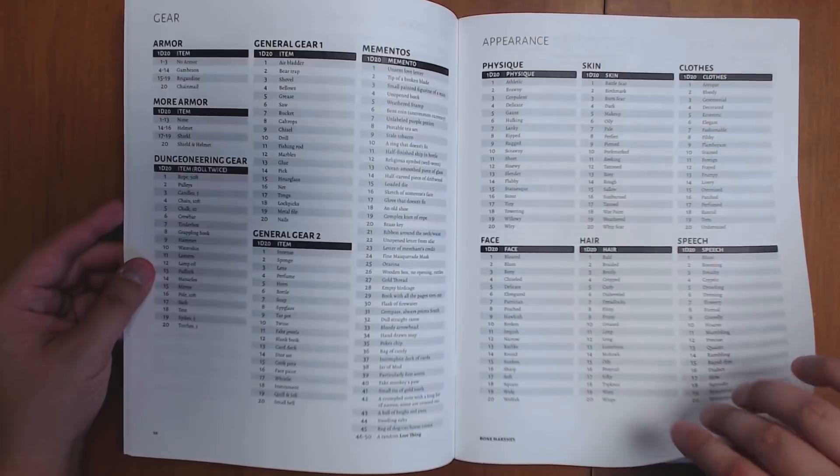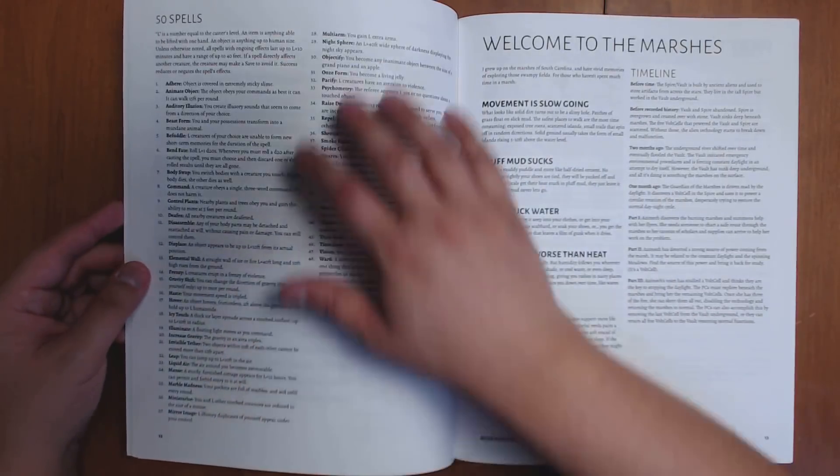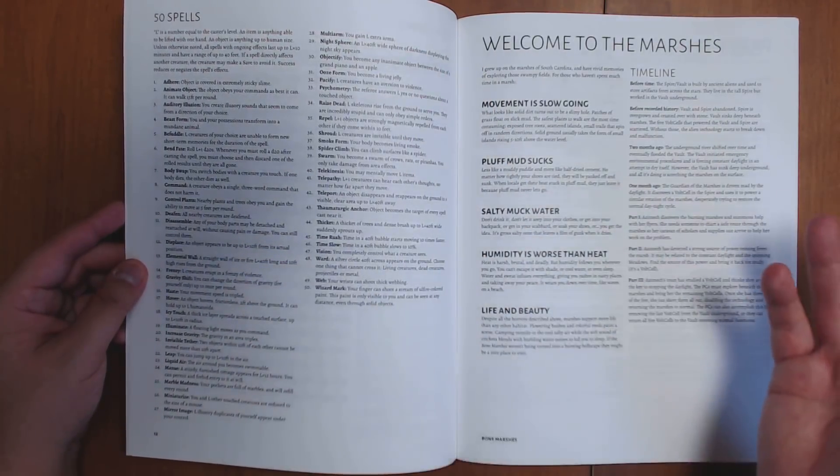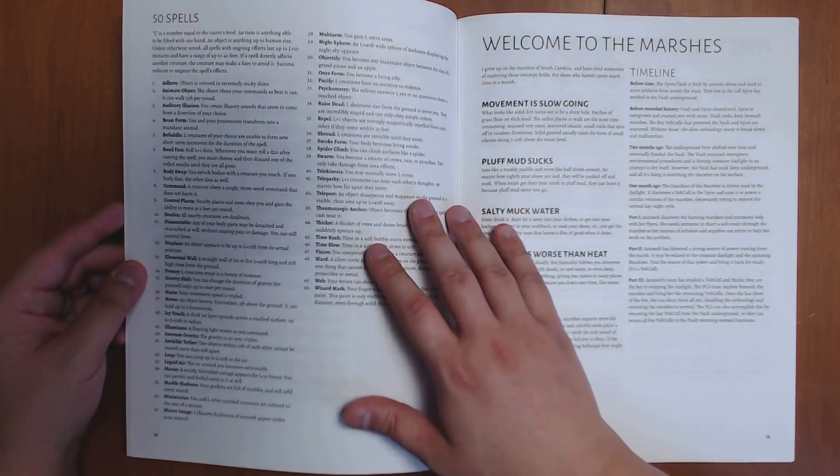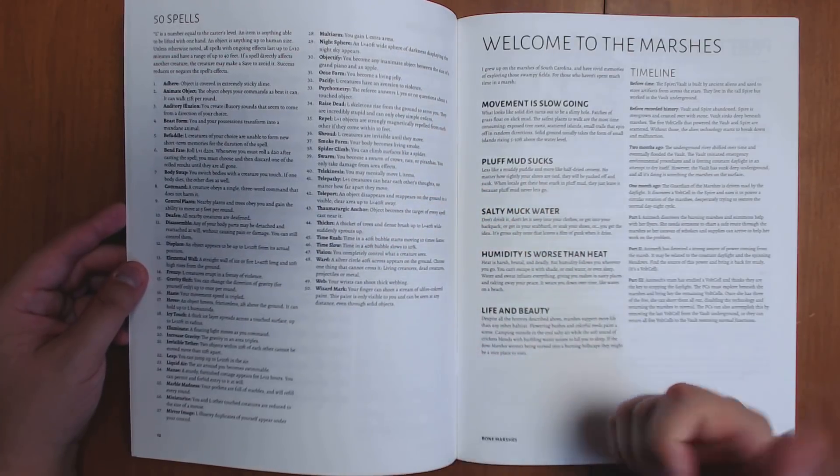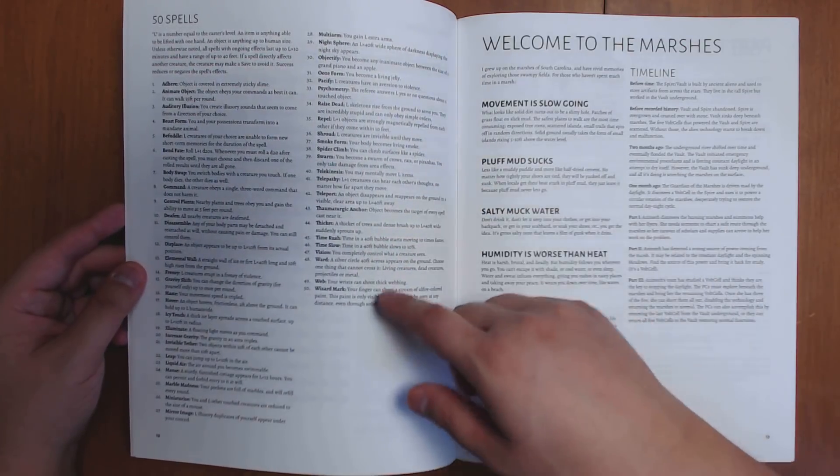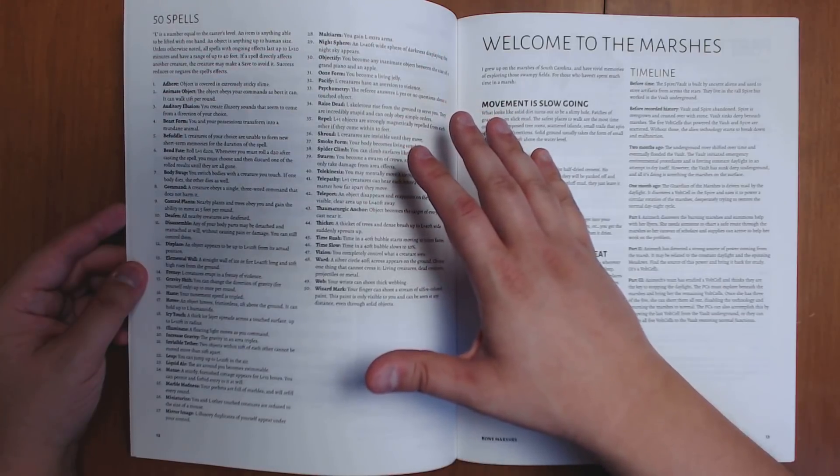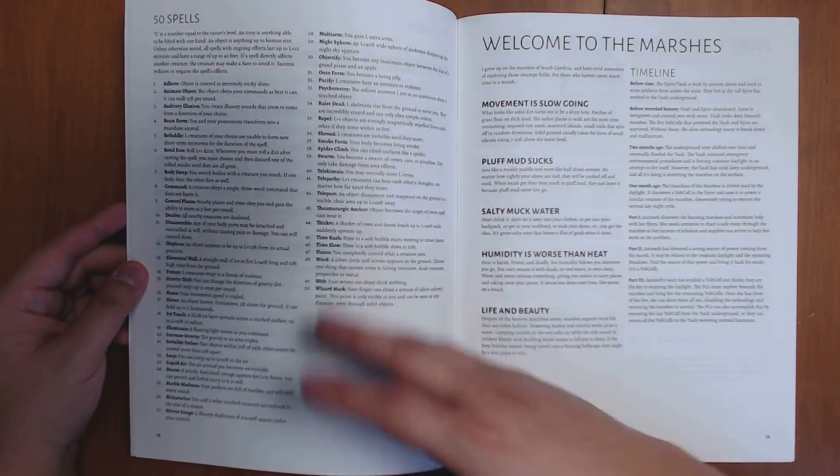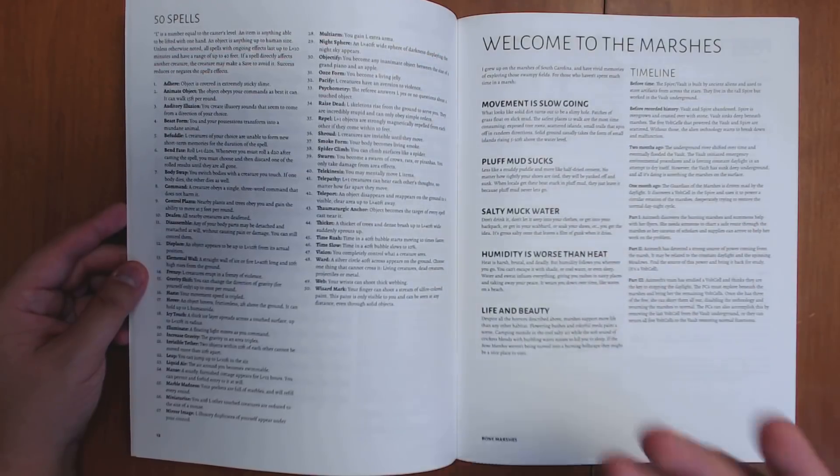We have lots of good tables for rolling up your gear, appearance. We have 50 spells. My original rule set has 100 spells, so if you want to get those extra 50 spells, you can check out mine. But there's a lot of really good ones here, and it's the sort of stuff that you would tend to find and work well in this swamp-like region, I think. That's the way it came across to me.